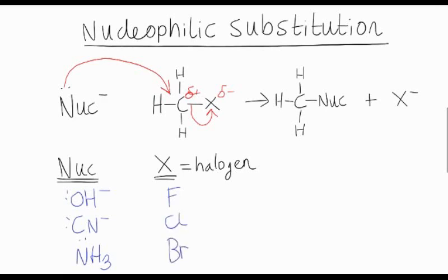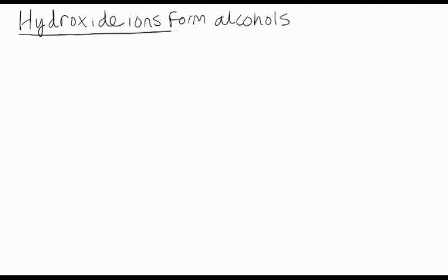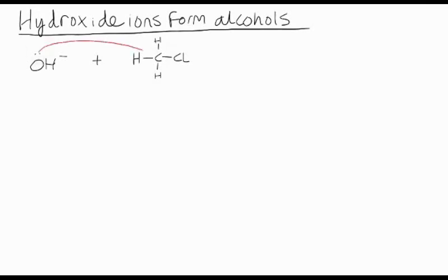Let's look at some specific examples of nucleophilic substitution. Hydroxide ions form alcohols when they act as nucleophiles, and the mechanism is just the same as the general mechanism. Take an OH⁻ ion with its electron pair and attack the delta plus carbon of a halogenoalkane. Draw that curly arrow, just stopping short of the carbon, and break the C-Cl bond. The OH⁻ takes the place of the chlorine to form an alcohol — methanol — and a chloride ion.